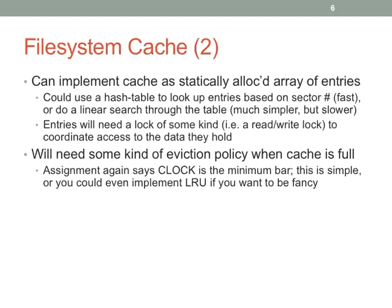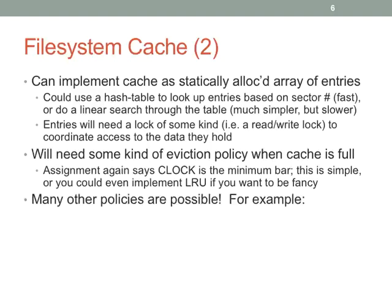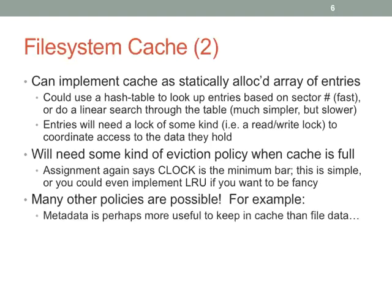The assignment says at least clock should be the minimum eviction policy. But in the file system cache you can get much more sophisticated, because you know exactly when accesses occur — much coarser grain than memory accesses. LRU is within grasp; something more sophisticated like ARC or CAR would also be within grasp. Or you could just do clock, because that's really simple.